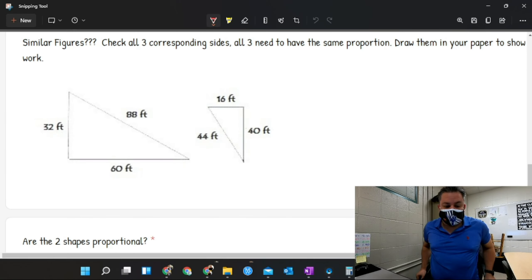Alright, let's go ahead and get to it. So similar figures - it says check all three corresponding sides. All three need to have the same proportion. Draw them in your paper to show your work. So first of all, I gotta find my corresponding sides, and I like to do this with the use of tick marks.